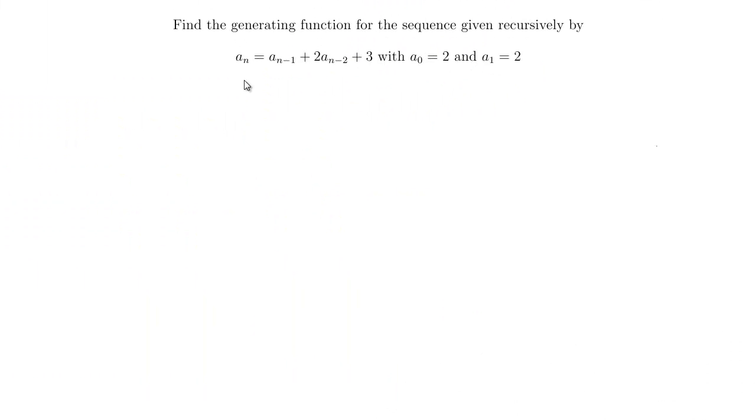Let's look at another example. Here the sequence is given recursively by the recurrence relation a_n equals a_{n-1} plus 2a_{n-2} plus 3, plus this constant. That makes this slightly different than any other examples we've seen before. I also give you the initial terms here. Again, probably a good idea to write down the first few terms of the sequence.